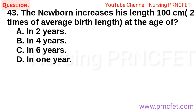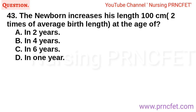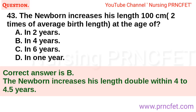Question 43: The newborn increases his length to 100 cm, two times the average birth length, at the age of: A. Two years. B. Four years. C. Six years. D. One year. Correct answer is B. The newborn doubles his length within four to four-and-a-half years.